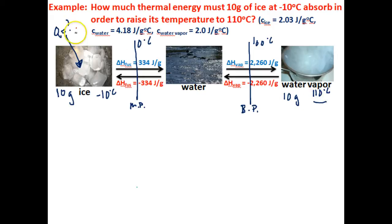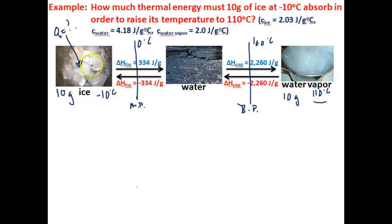What we want to know is how much thermal energy is involved with raising 10 grams of ice at negative 10 degrees Celsius to water vapor at 110 degrees Celsius. To solve this problem, we need to break it up into five little pieces. In the first step, we are going to calculate the amount of thermal energy it will take to raise the temperature of 10 grams of ice from negative 10 degrees Celsius to zero degrees Celsius.